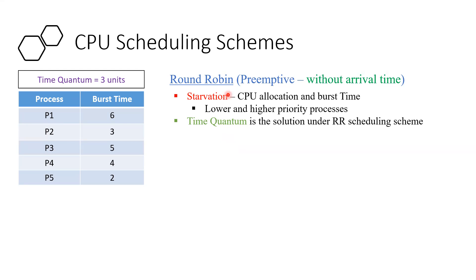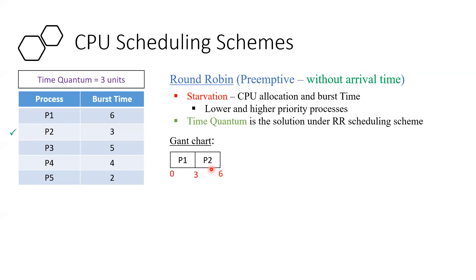In a particular scenario, once a process completes its execution or its time quantum expires, it comes back to the ready queue — this is the preemptive scheduling scheme. Without arrival time, we execute the processes in sequence. The time quantum is 3 units. From 0 to 3, P1 gets a maximum of 3 units. After that, the processor takes it back and P2 arrives for execution. P2 requires 3 units and the quantum is 3, so P2 completes in the first go.